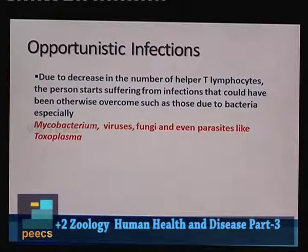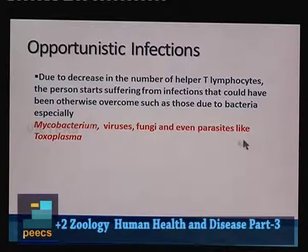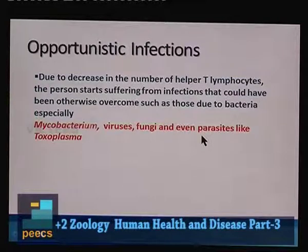Because T lymphocytes are very low in the bloodstream, the person becomes infected by different types of pathogens — the immune system is very weak. Due to the decrease in T lymphocytes, there will be opportunistic infections from mycobacterium, viruses, fungi, and even parasites like Toxoplasma, because the immune system is very weak.